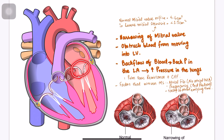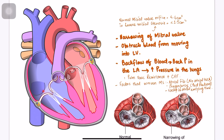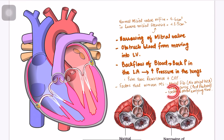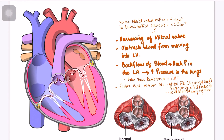Factors that worsen mitral stenosis include atrial fibrillation — because of increased backflow the atria stretches, increasing the chances of AFib, which worsens mitral stenosis. Pregnancy worsens it because of increased blood volume and increased preload. Tachycardia also worsens the situation because the heart beats fast but cannot pump blood faster through the stenotic mitral valve.